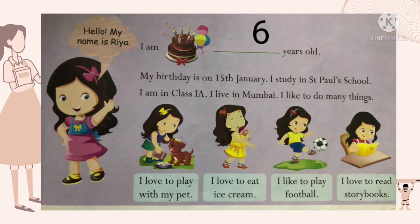I like to do many things. Looking at the picture, Riya kis ke saath khel rahi hai? Dog ke saath — I love to play with my pet. I love to eat ice cream — Riya ko ice cream khana pasand hai. I like to play football — Riya ki favorite game football hai, which we play by kicking a ball. I love to read storybooks — Riya ko storybooks padhna pasand hai, jinke andar kahaniyaan hoti hain.